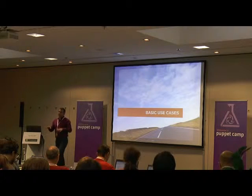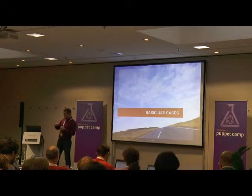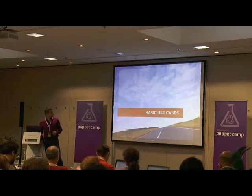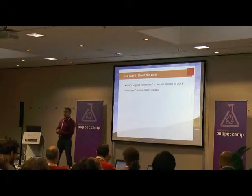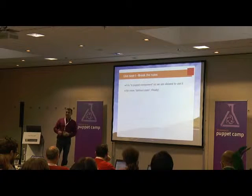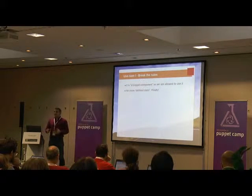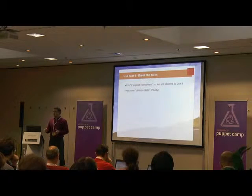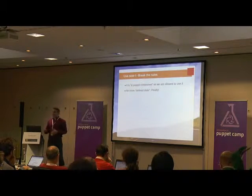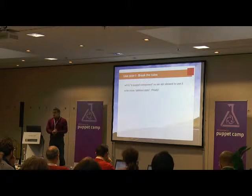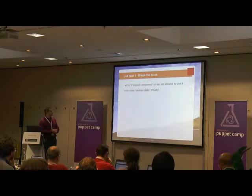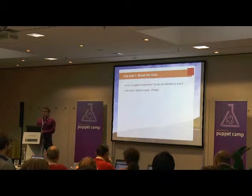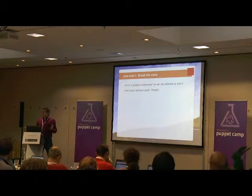Today I want to start with use cases — just before explaining the product, I'm going to tell you what people are doing with mCollective. Use case one: they use mCollective to break the rules. We finally have this defined state — we have Puppet and we declare those defined states, and that's beautiful, that's how it should be. And many people hate this — it's no longer possible to do things very quickly. So mCollective is great, because we are allowed to use it.